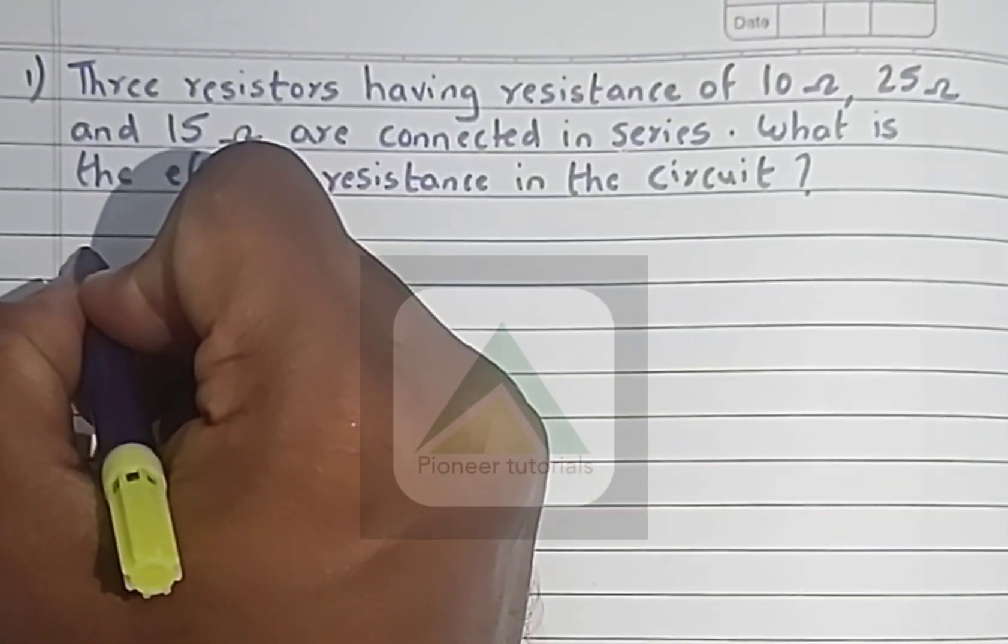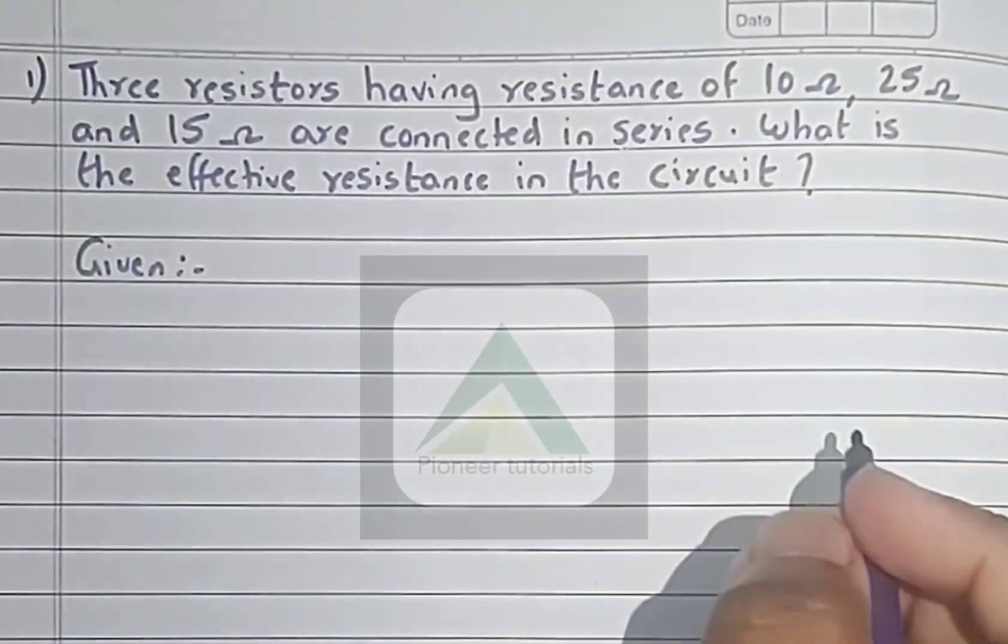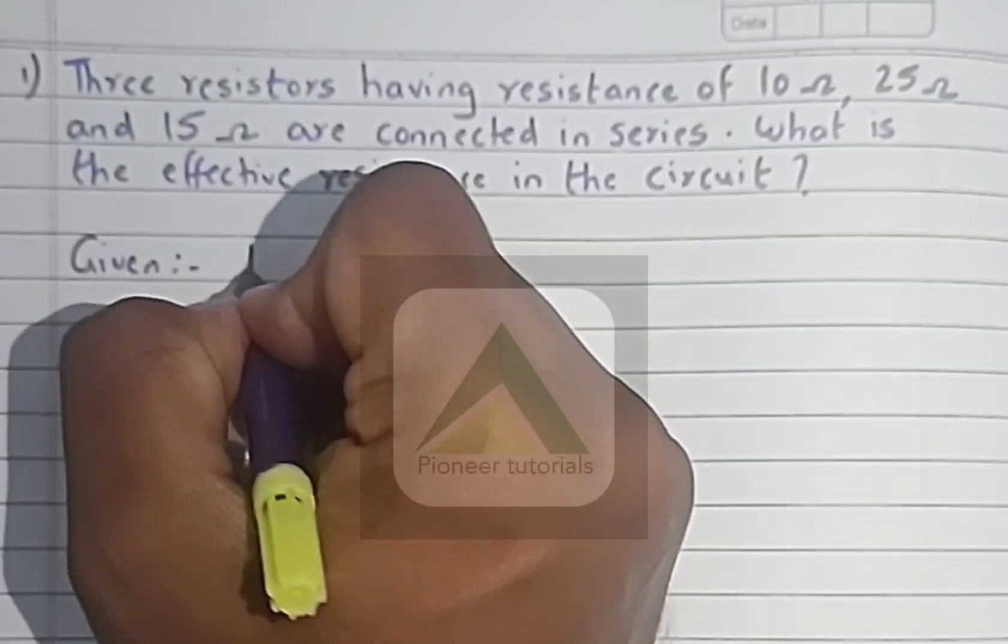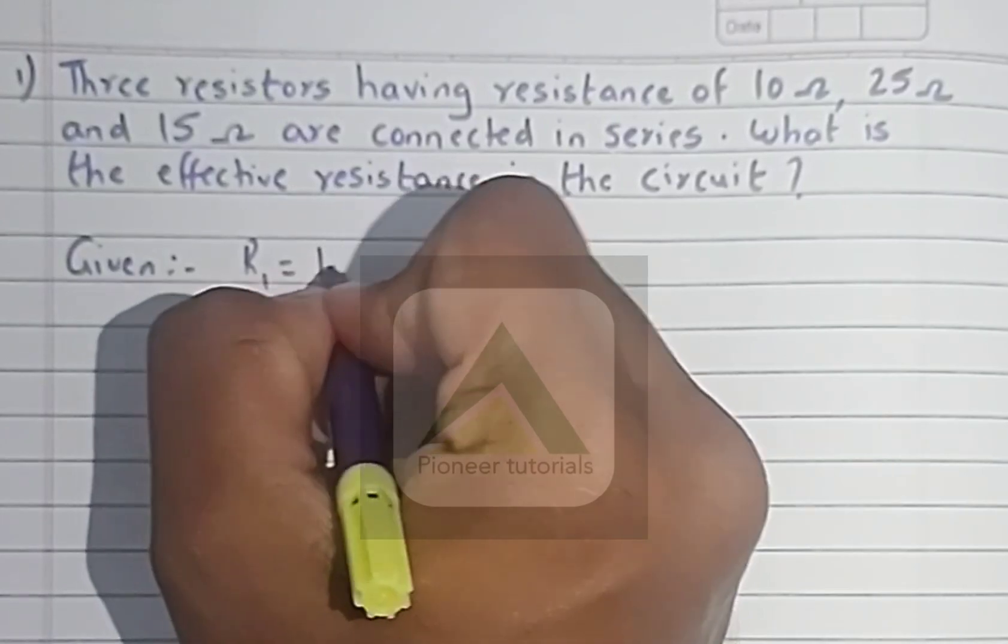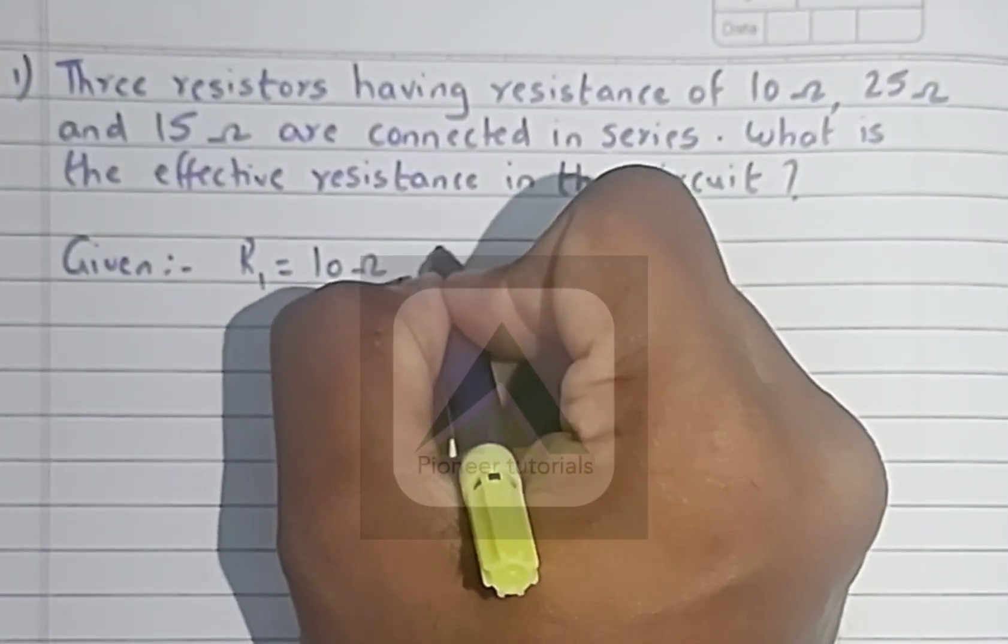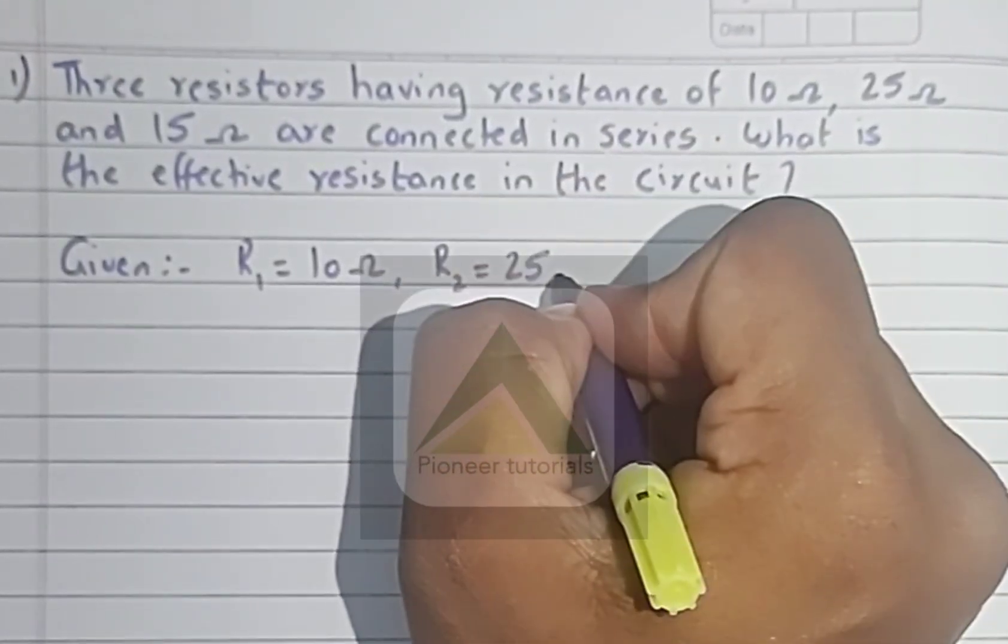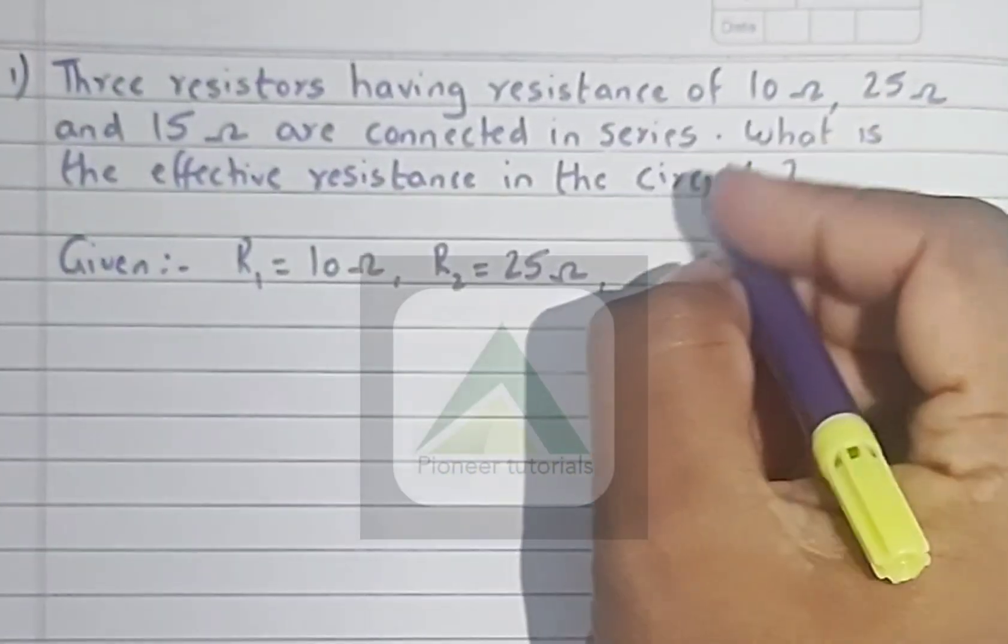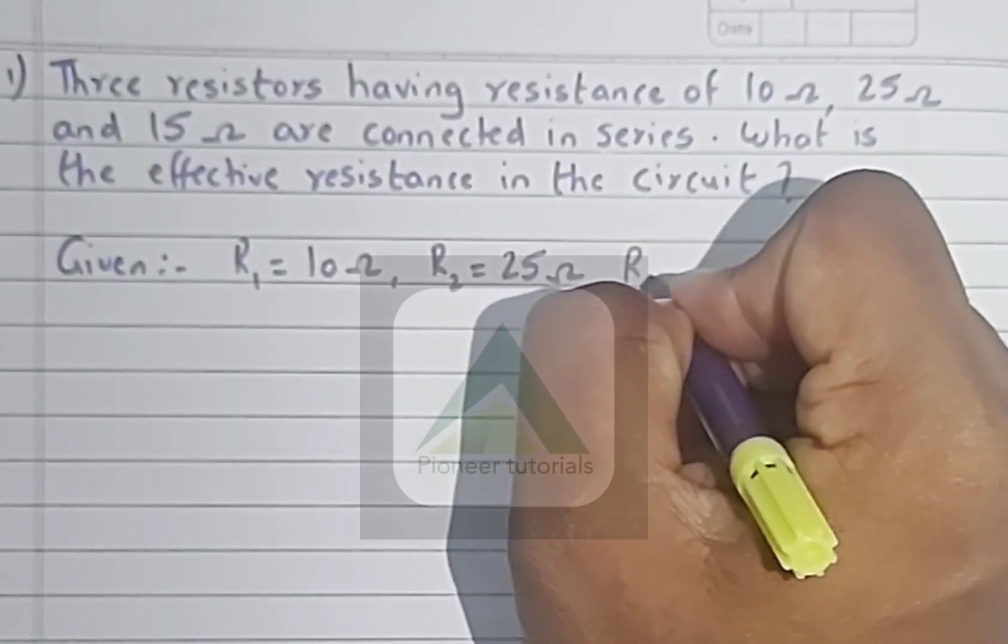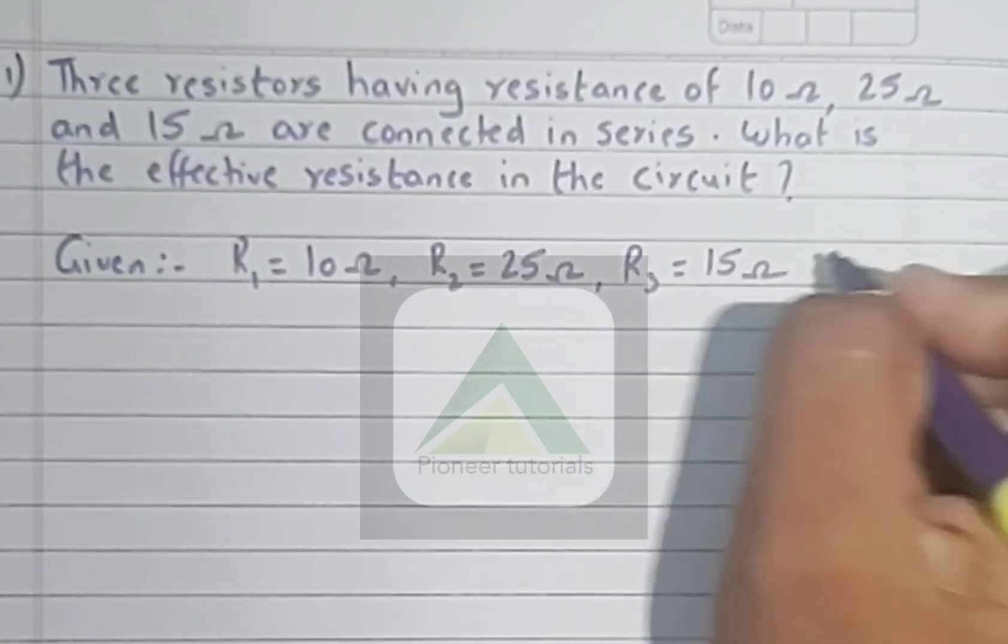So let us see the given part. What are the given values? R1 is equal to 10 ohm, R2 is equal to 25 ohm, R3 is equal to 15 ohm.